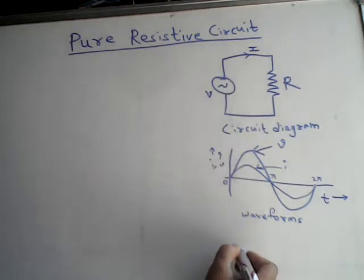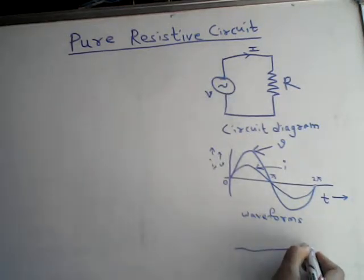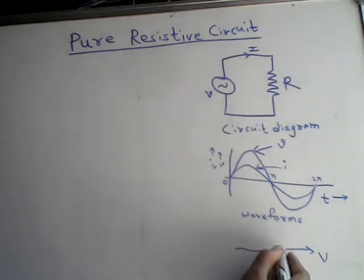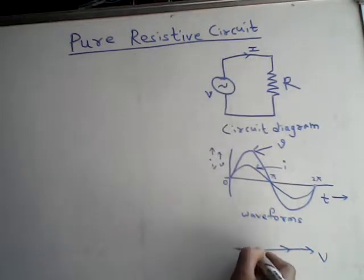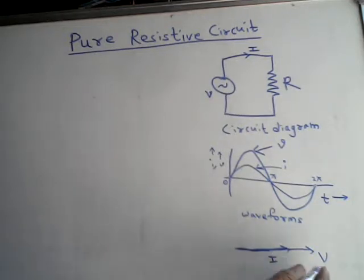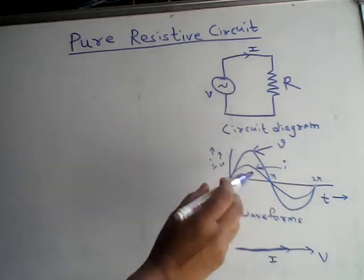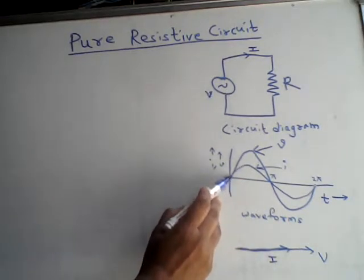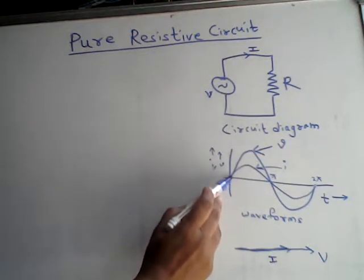Now let us consider the phasor diagram. The phasor diagram can be represented in this way. If the voltage is represented along the X axis, then the current can also be represented along the same axis, indicating that both current and voltage are on the same axis because there is no phase difference between them.